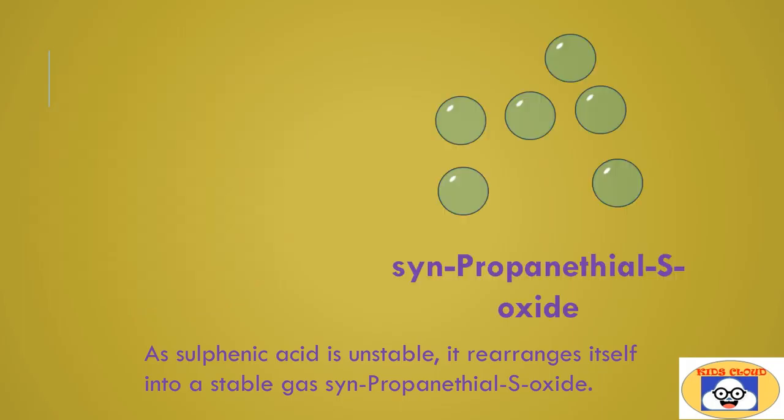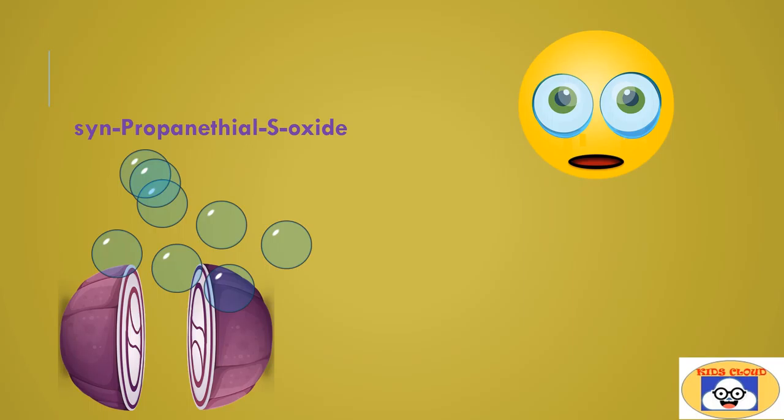Syn-propanethial-S-oxide is a volatile compound. It floats up to our eyes and stimulates tear-producing lacrimal glands.